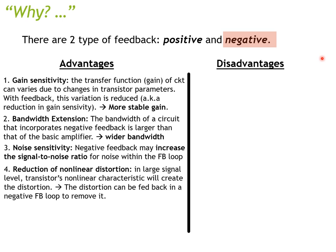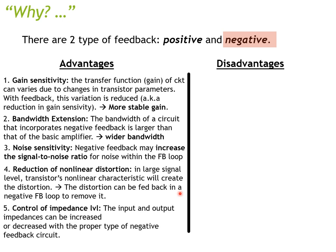This noise improvement applies to signals originating from within the feedback loop. The fourth advantage is reduction of non-linear distortion. When working with large signal levels, transistors have non-linear characteristics that create distortion — this distortion can be fed back through the negative feedback loop to remove itself. Finally, using a feedback amplifier gives you more control over designing the input and output impedance; you can increase or decrease it with the proper type of negative feedback circuit design.